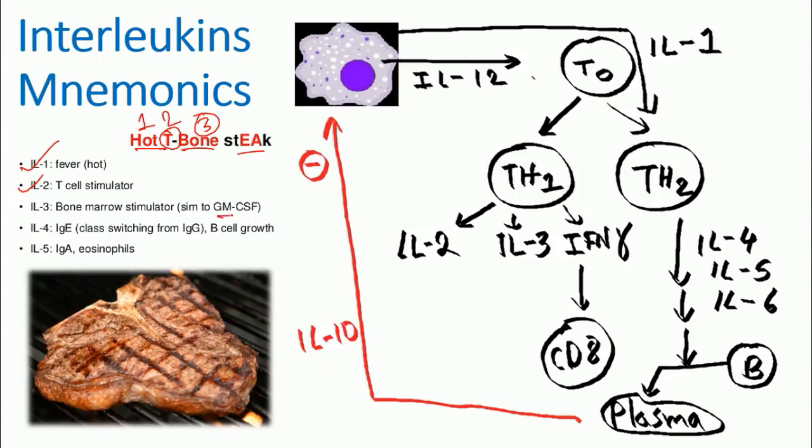Now the fourth one is 'E.' E is IgE or immunoglobulin E. It helps in the class switching from IgG for the B cell growth. It also has B cell growth. And the fifth interleukin is 'A,' so 'A' linked with Ig or immunoglobulin A, or eosinophils. So the activation of eosinophils and the influencing of B cells to produce IgA antibody.